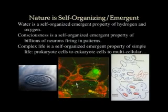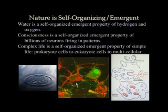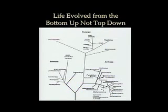Nature is filled with self-organizing emergent complex adaptive systems. Water is a self-organized emergent property of hydrogen and oxygen. Consciousness is a self-organized emergent property of billions of neurons firing in patterns. Complex life is a self-organized emergent property of simple life — prokaryote cells become eukaryote cells become multicellular organisms and so forth. So life evolved from the bottom up, not the top down.